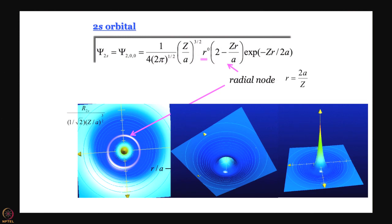Now let us go back to this definition that we like to debunk so much: that an orbital is a region of space where the probability of finding the electron is maximum. Well, that definition is there in so many places — there must be something in it. So let me modify it a little bit and say that an orbital can be used to determine the region of space where the probability of finding the electron with that wave function is maximum.